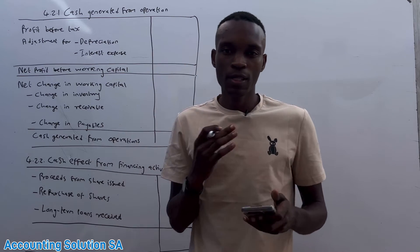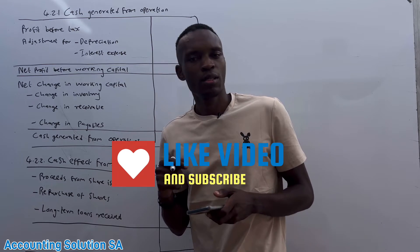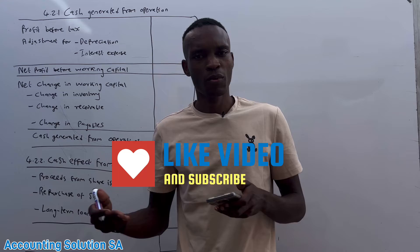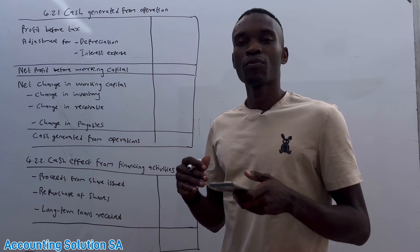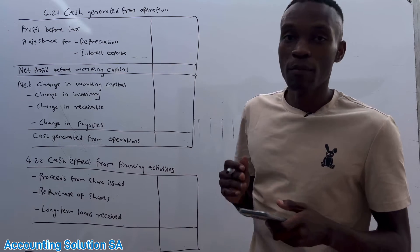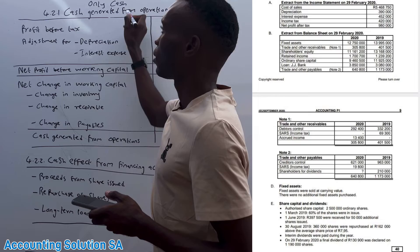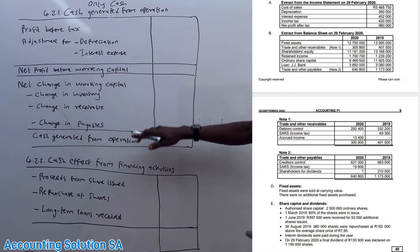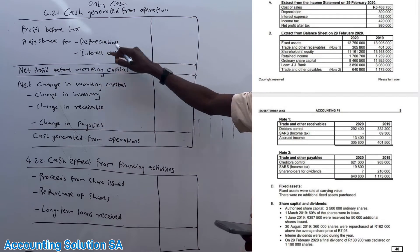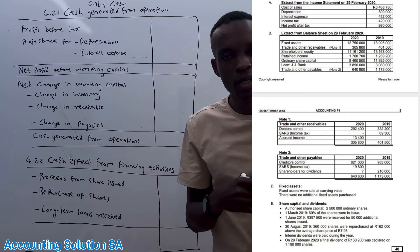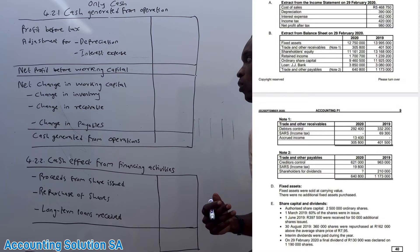Remember, under the income statement we have a net profit. That net profit contains amounts like depreciation and interest — non-cash items that were subtracted. When we prepare a cash flow statement, we only deal with cash. So we prepare this note to adjust and add back depreciation, because we subtracted it on the income statement. Now we add it back so that we get a profit figure which is cash-based.